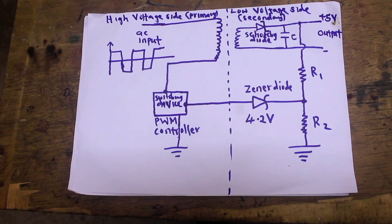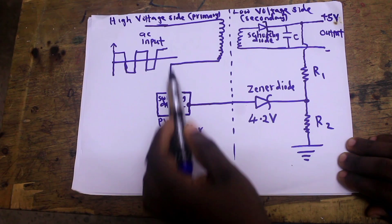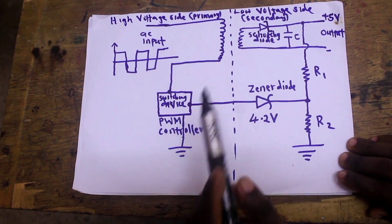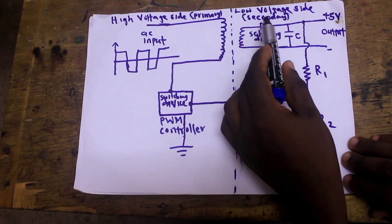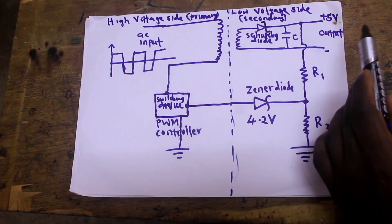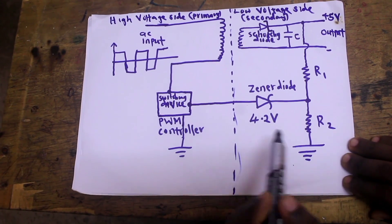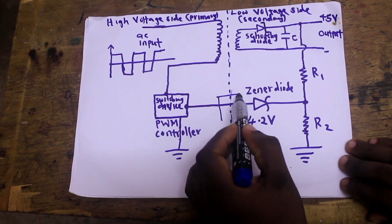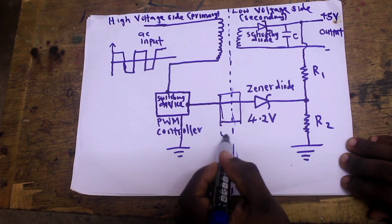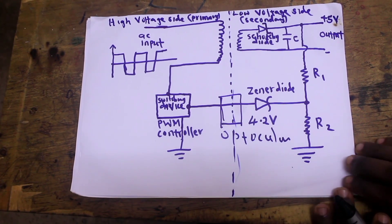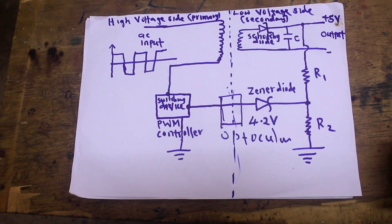There is also a separation. This is the low voltage side which is 5 volts and this side has 300 volts DC so there is this separation between the two sides. There should be no direct connection between the secondary side which is low voltage side and the high voltage side. For that here there is a device which is called the optocoupler. This optocoupler is used to separate the power connection between the primary side and the secondary side.